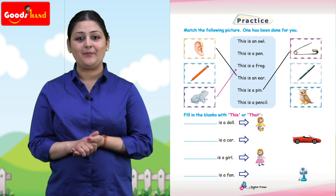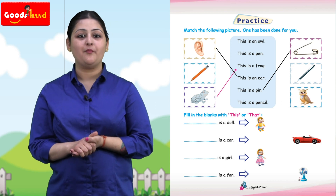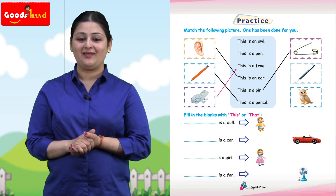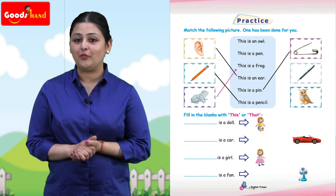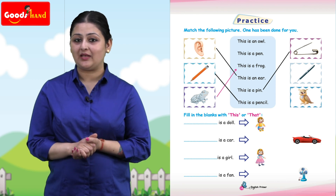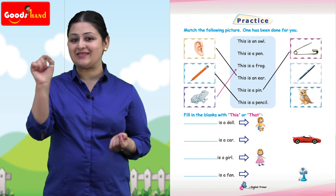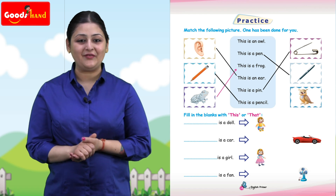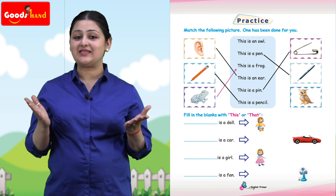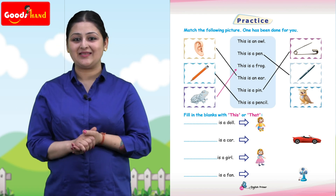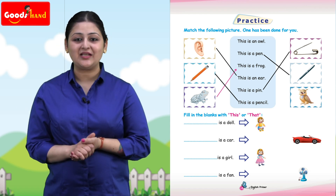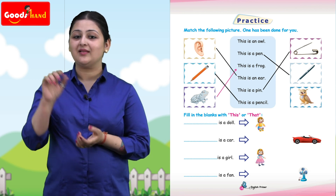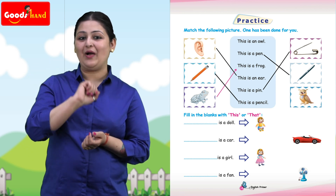The third one is pencil, so match it with: this is a pencil. The fourth one is pen, so match it with: this is a pen. The fifth one is frog — this is done for us. The sixth one is owl, so match it with: this is an owl.